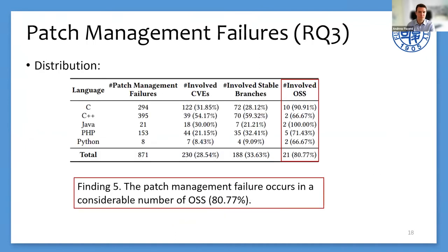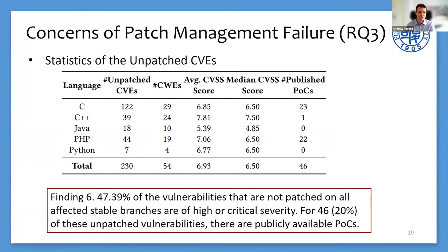The remaining 10% of unpatched CVE-branch pairs are caused by failures in patch management. We analyze these cases from the perspective of involved CVEs, branches, and OSS projects. Patch management failures occur in 80% of software. Since users prefer to use OSS from stable branches still under maintenance, patch management failures are more likely to expose users to security threats. These vulnerabilities cover a wide range of types — 47% have a CVSS score over 7, and 20% have publicly available PoC exploits, meaning attackers can exploit unpatched stable branches at low cost.